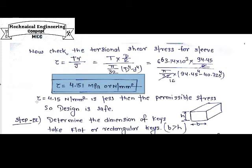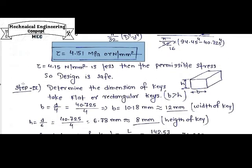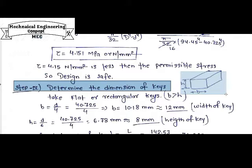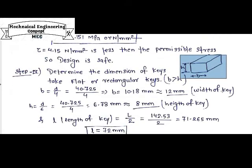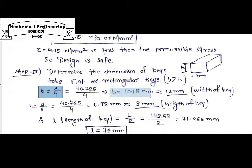After designing the sleeve, we need to design the key, which is used to lock the shaft into the sleeve to transmit power from one shaft to another. For muff coupling, in practical applications a rectangular key (flat key) is preferred. The width of the key b = d/4 = 40.725/4 = 10.18 mm, which is rounded off to 12 mm.